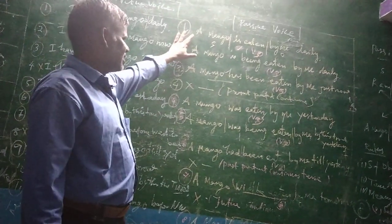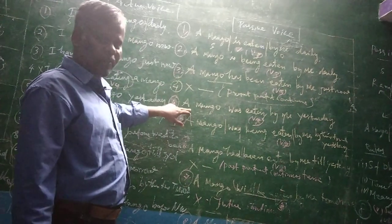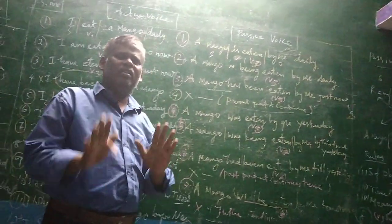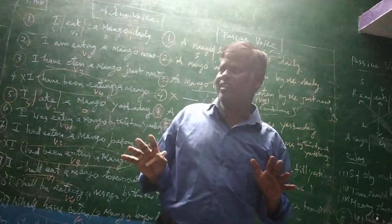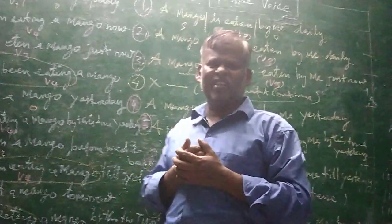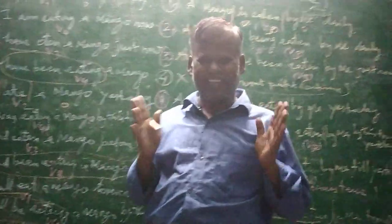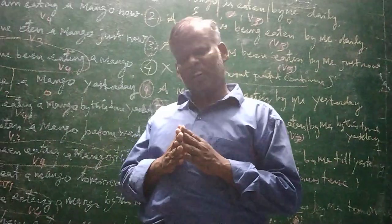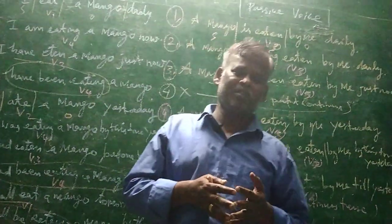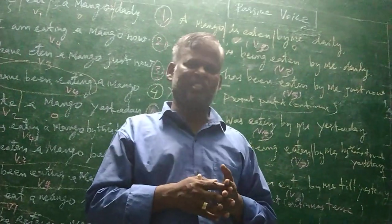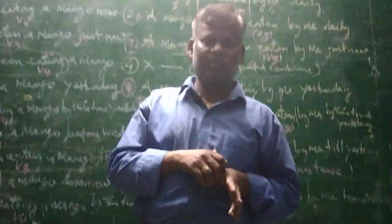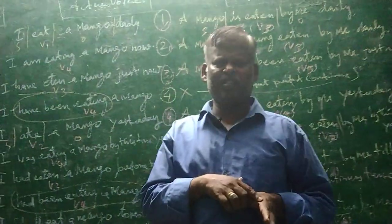So we have passive forms only for: simple present, present continuous, present perfect, simple past, past continuous, past perfect, simple future, and future perfect — only 8 passive forms and 12 active forms. We must have thorough knowledge about tenses to understand anything — what we listen, what we read, what we write. Without this basic fundamental knowledge, it is highly not possible to speak in English language.